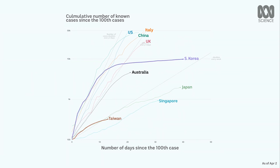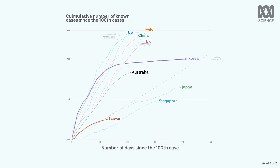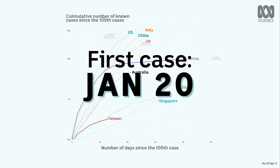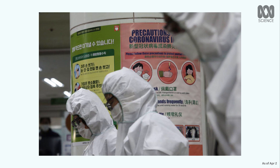One country that has managed to drastically reduce new cases after an initial spike is South Korea. Like Singapore and another success story, Taiwan, South Korea's response was informed by shortcomings in fighting a previous disease. Even before the country had any confirmed cases, quarantine and screening measures were in place for arrivals from Wuhan. The first case was reported on January 20. A month later, the case numbers had leapt to 104. Two days later, the government raised the threat level.